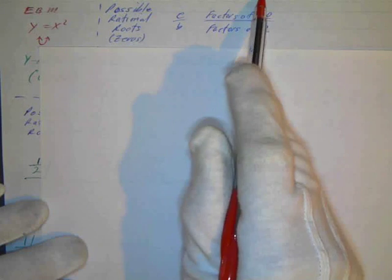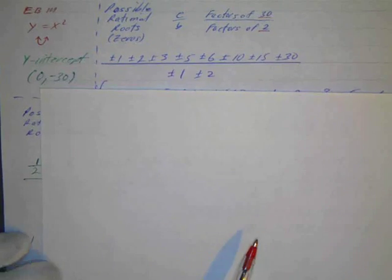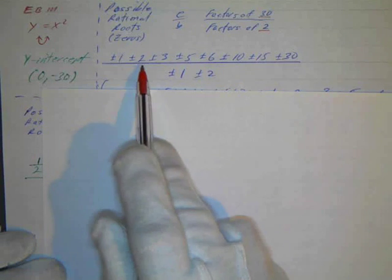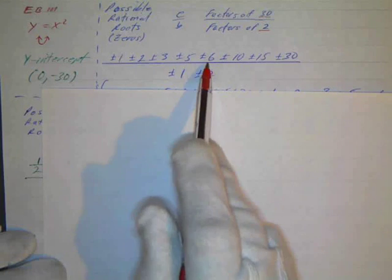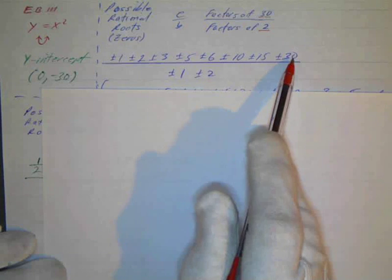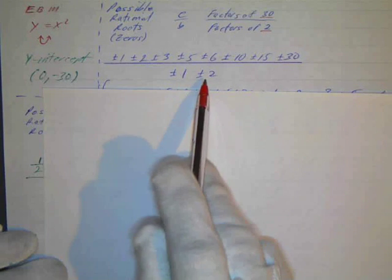Okay, and then we want to find all of our possible rational roots or zeros. That's going to be factors of 30, that's our constant number, over factors of 2, the leading coefficient. All the factors of 30, we got a lot of them: plus or minus 1, 2, 3, 5, 6, 10, 15, and 30. The factors of 2 are plus or minus 1 and plus or minus 2.